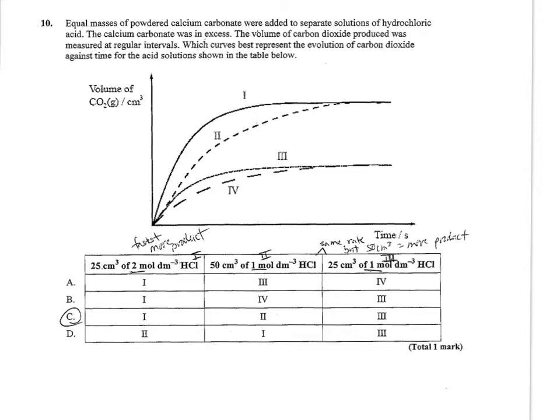I know that this last one is either graph three or four because it has less yield, just less HCl reacting. These first two are going to produce graphs one and two. The question is which graph is one and which is two? The more concentrated is going to produce the faster rate. So this is graph one.